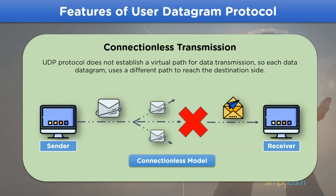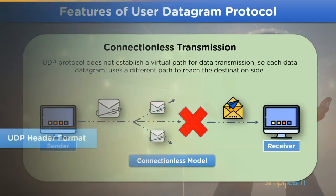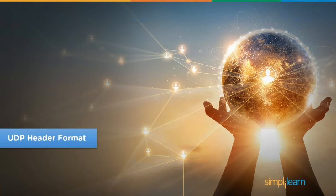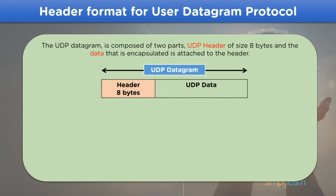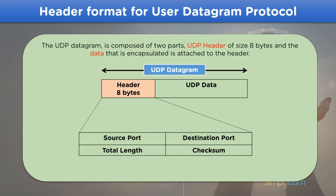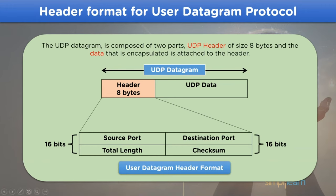Now let's move on to the next heading: UDP header format. The UDP header format comprises two parts: first, the UDP header part, which is 8 bytes in size, and second, the data to be transmitted. Furthermore, the header part is divided into four different parts — source port, destination port, total length, and checksum — where each of the parts is divided into 16 bits.